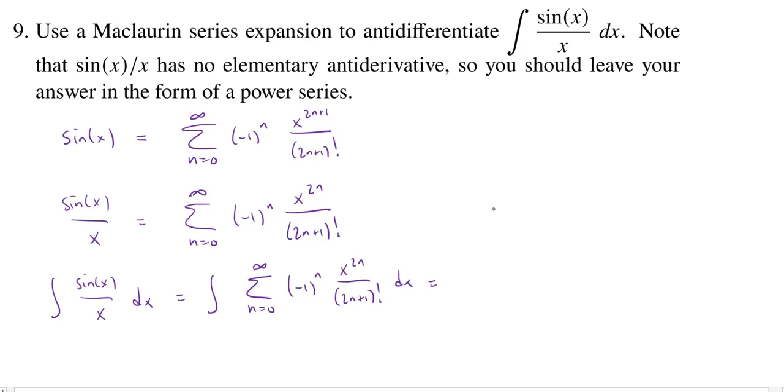So this is going to equal the sum from 0 to infinity alternator over 2n plus 1 factorial. And now we just integrate the x to the 2n with respect to x.